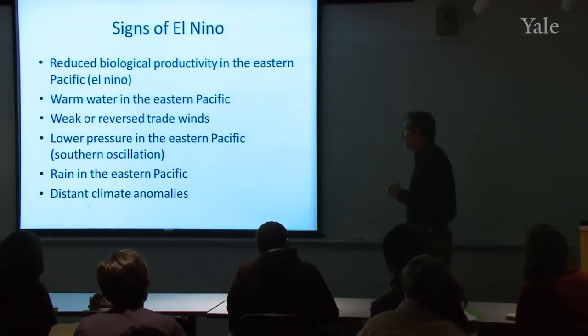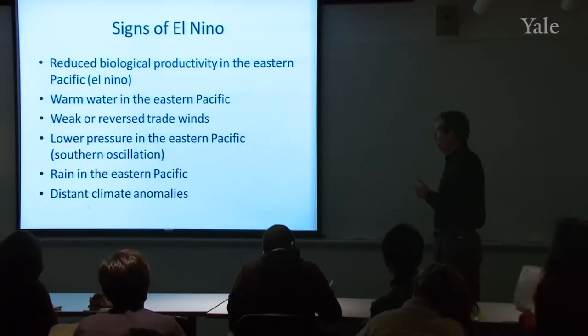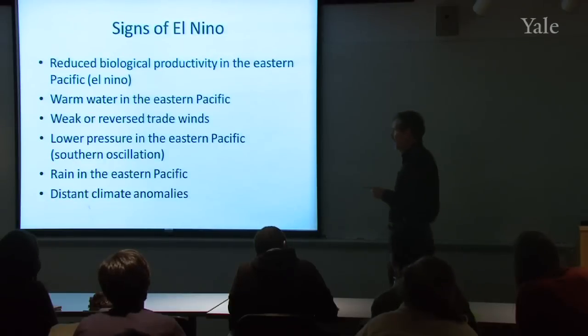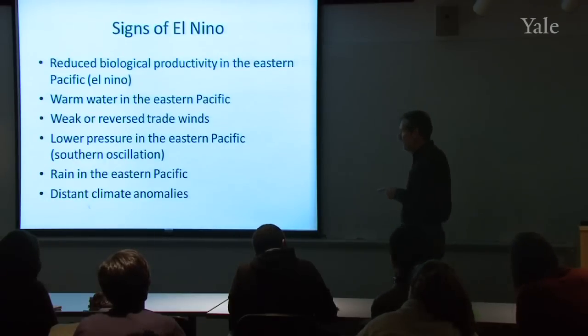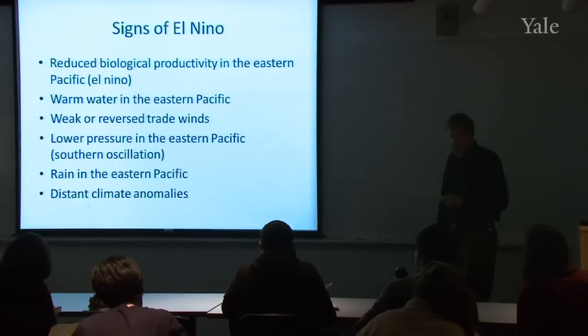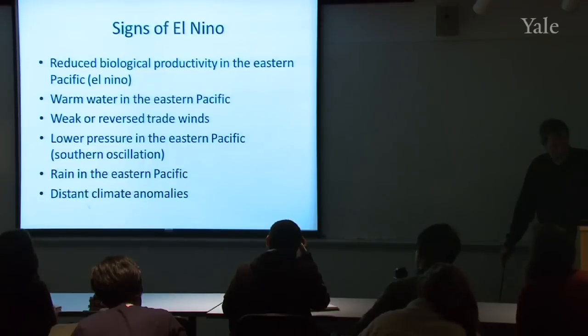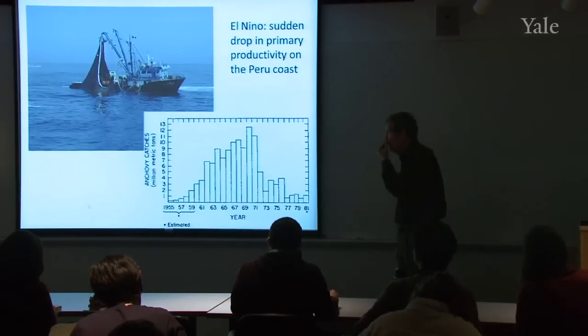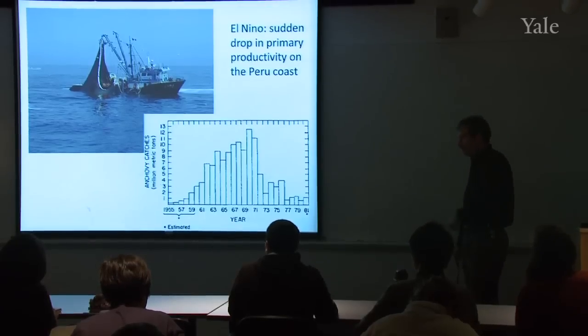And I'll be using those terms freely as we go through the discussion today. So be sure you're clear on all of those terminologies. So here's a list of some of the symptoms then. So during El Niño, you've got reduced biological productivity in the eastern Pacific, warm water in the eastern Pacific, weak or reverse trade winds, lower pressure in the eastern Pacific, rain in the east. And as I'll show you later on, there are some distant climate anomalies that are connected with El Niño, but occur in other parts of the world as well. I'll get to that later in the lecture.